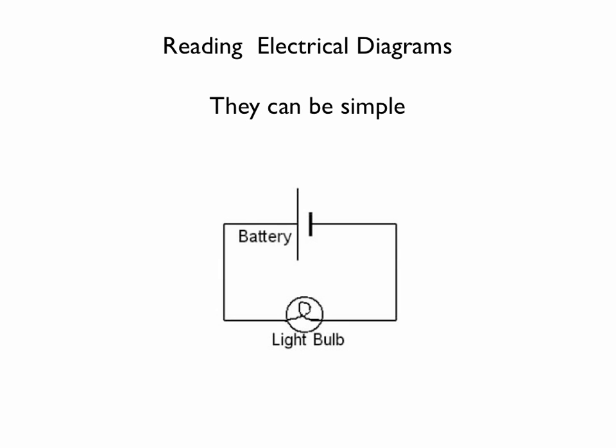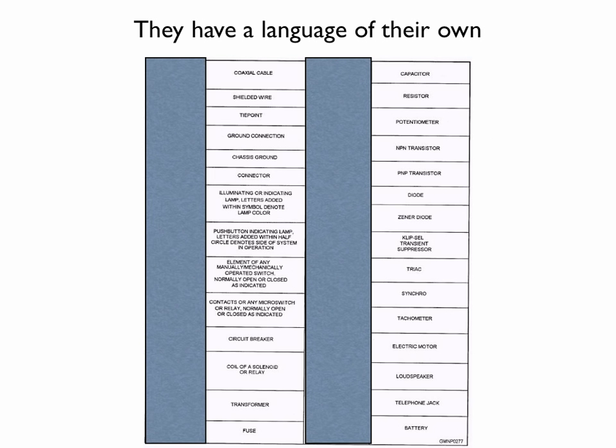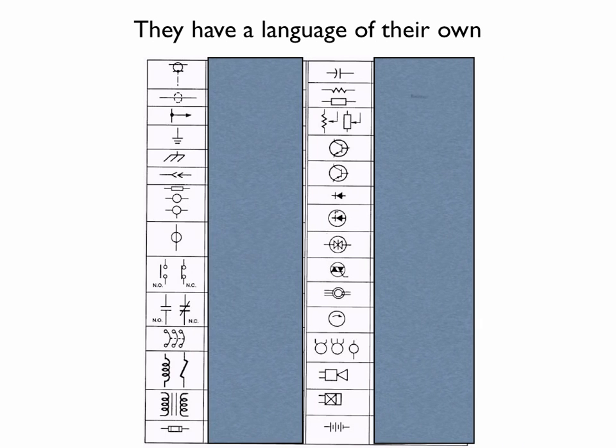Reading an electrical diagram, they can be pretty simple or they can be complex and they've got a language of their own. Now we normally talk and we use words as you read here for the word resistor, chassis ground, electronic motor or fuse. When I say those words something comes to mind. Well an electrical diagram they don't use words they use symbols to say the same thing. So we have to understand the language of symbols.